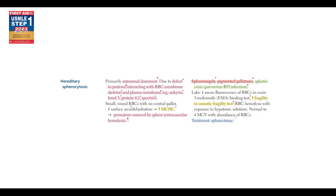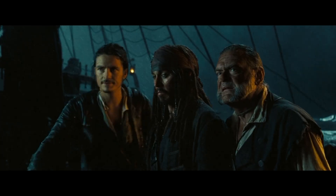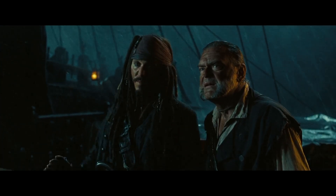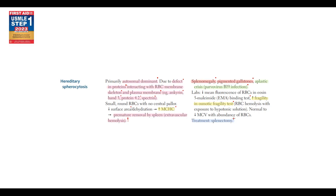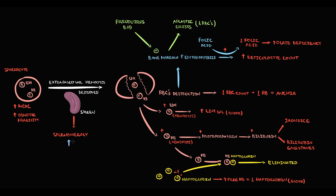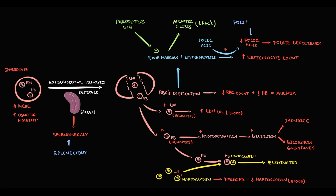The treatment is simple — it's splenectomy. The reason is that we cannot correct the mutation causing spherocyte formation, but we can eliminate the site of their destruction, so splenectomy will prolong their life in the bloodstream. We also give the patient folic acid, simply because they usually have folate deficiency due to overactive erythropoiesis.